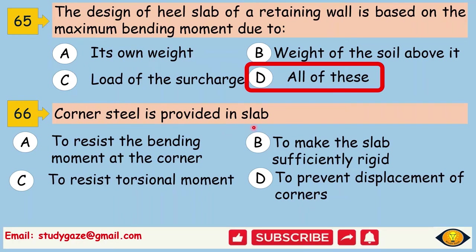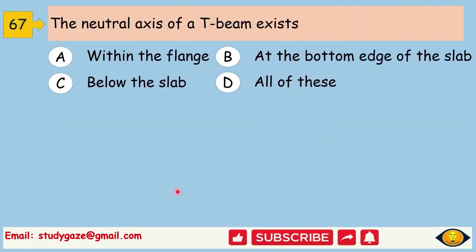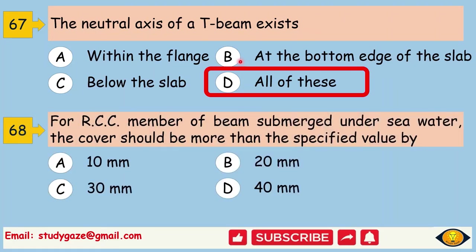Cornered steel is provided in slab to resist torsional moment. The neutral axis of a T beam exists within the flange at the bottom edge of the slab, below the slab, all three. For RCC member of beam submerged under seawater, the cover should be more than the specified value by 40 mm.